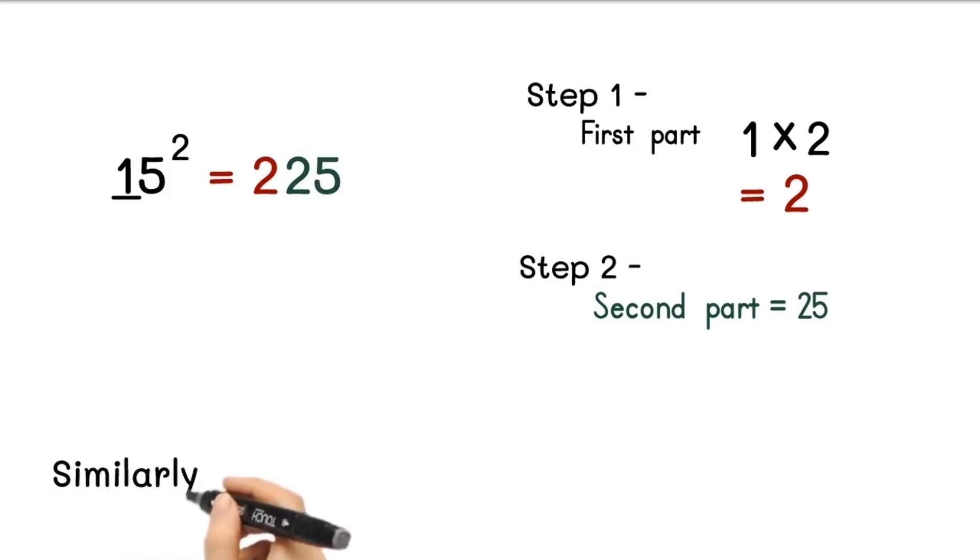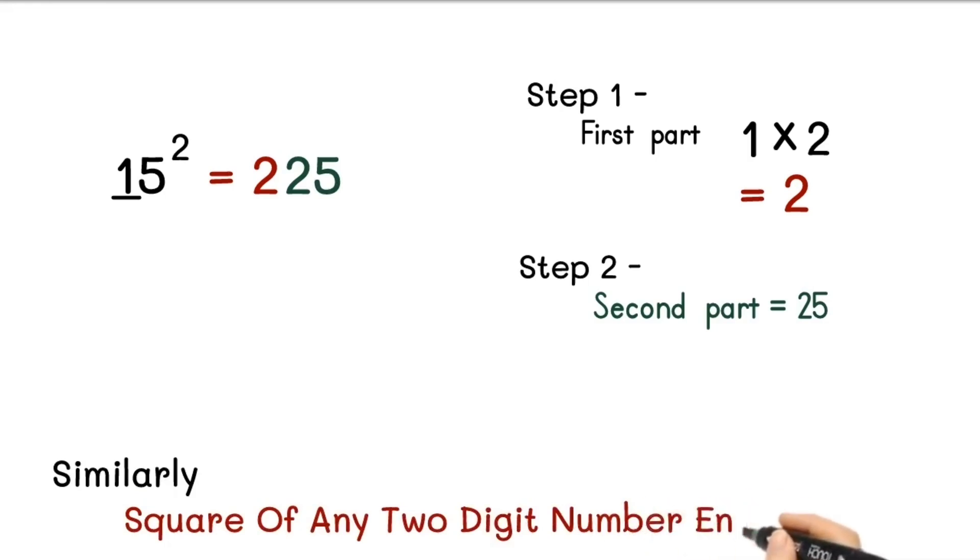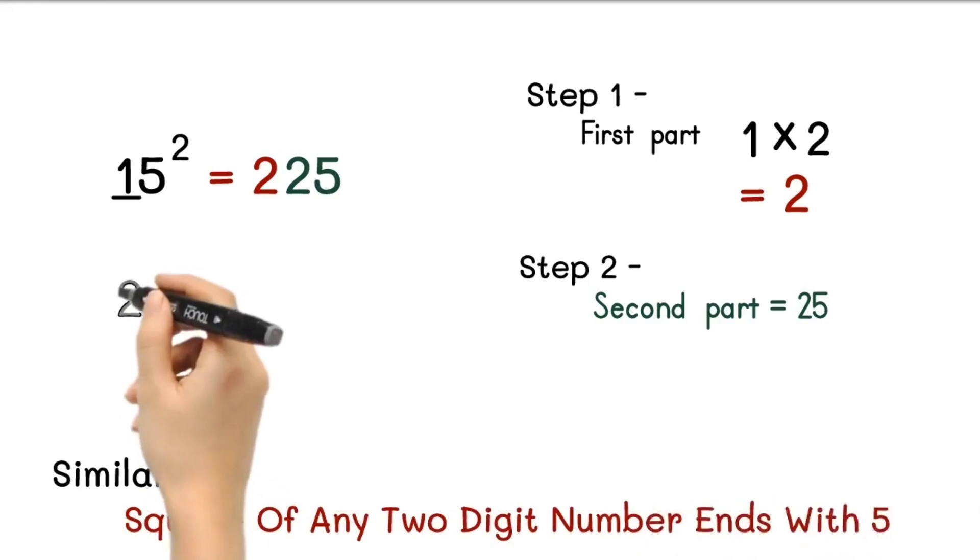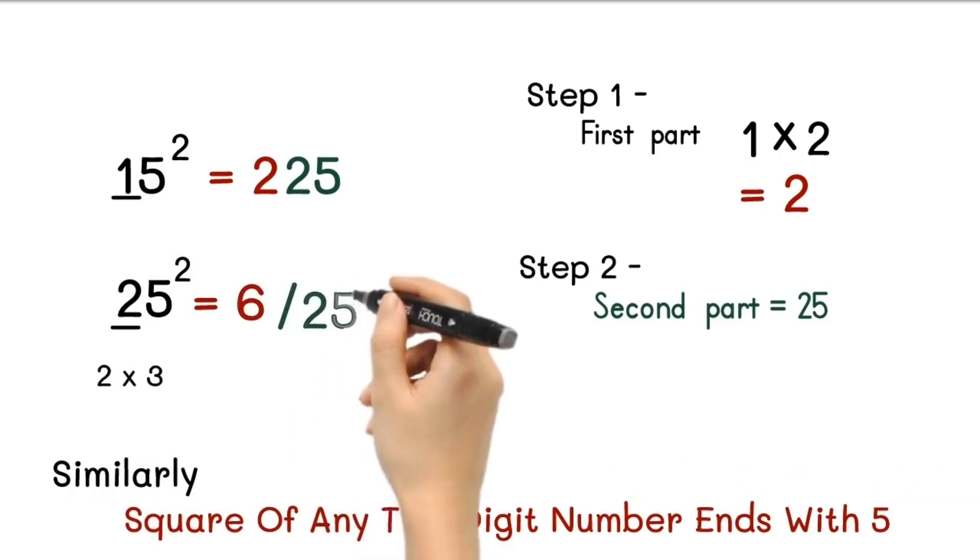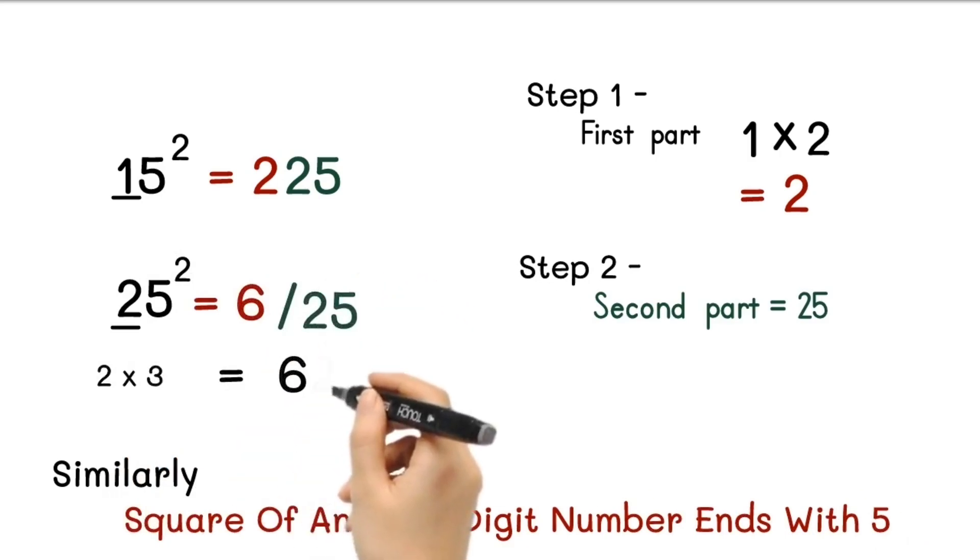Similarly, you can find out square of any two digit number which ends with 5. Let's take next example here, square of 25. So here tens digit is 2 and the next number is 3. So 2 multiplied by 3 equals 6. This is our first part. And second part is 25. So our answer will be 625.